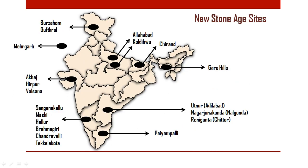From an exam point of view, sites are important. The first site is Mehrgarh, located in present-day Pakistan, famous for evidence of houses and for being the first to take up agriculture in the Indian subcontinent. Crops like wheat, barley and cotton were first discovered from here.